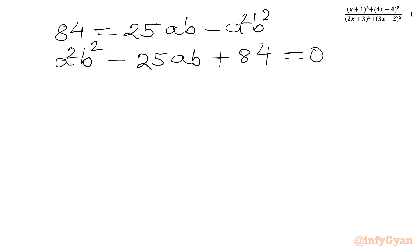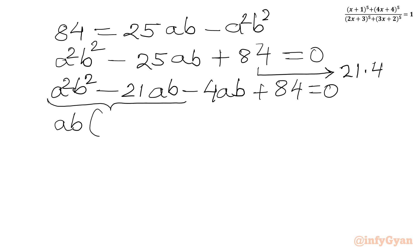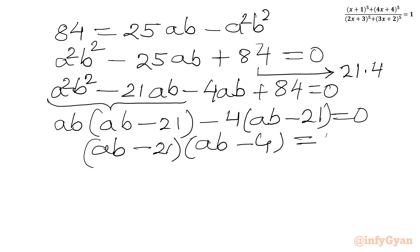Now this is quadratic in ab, so I will use factorization. The split of 84 is 21 times 4. So I write a^2 b^2 minus 21ab minus 4ab plus 84 equal to 0. From the first two terms ab is common, giving ab(ab minus 21), and from the last two terms negative 4 is common, giving negative 4(ab minus 21) equal to 0. So (ab minus 21)(ab minus 4) equal to 0, meaning ab equal to 21 or ab equal to 4.